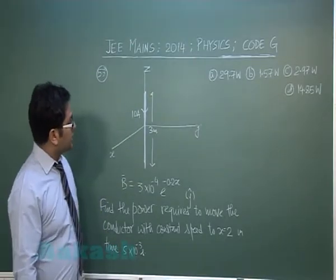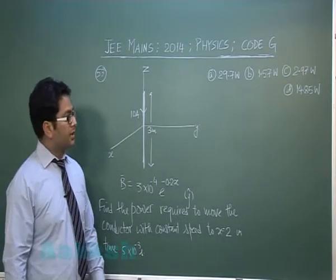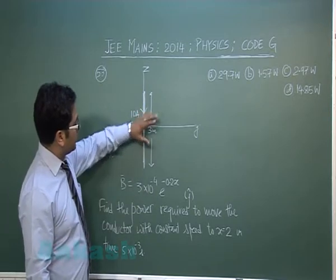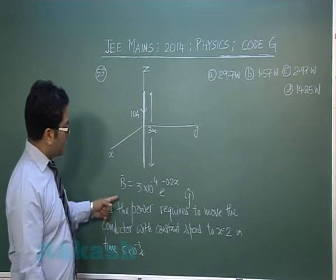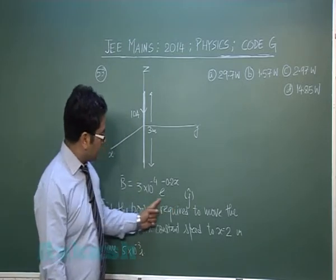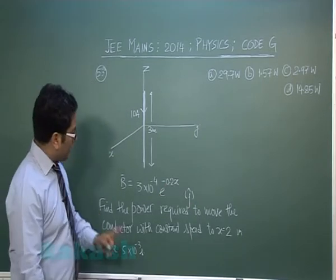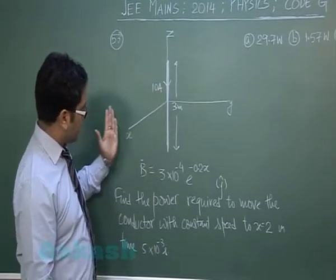Question number 53: There is a conductor of length 3 meters carrying current 10 amperes in negative z direction. Magnetic field is given in the y-axis. We need to find the power required to move the conductor with constant speed to x = 2 in the given time.